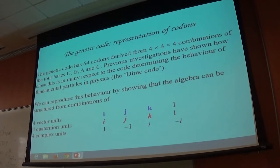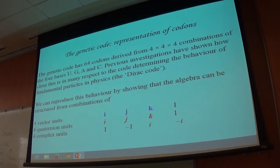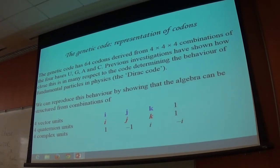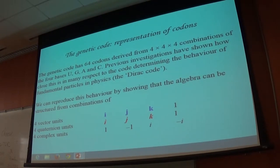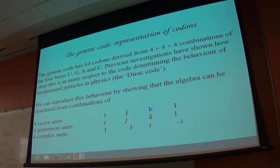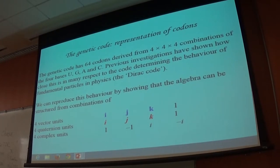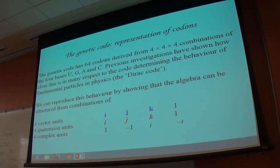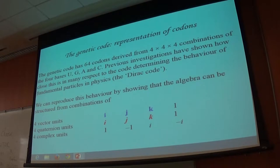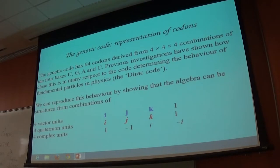The genetic code has 64 codons — units of three bases from DNA or RNA. There are three bases, each forming a codon, and there are 64 possible codons because there are four bases, so 4 × 4 × 4 = 64. The four bases are U, G, A, and C. We've done quite a lot of previous investigations showing how close this is to determining the behavior of not only fundamental particles, but also genetics as well — many of the same things happen.